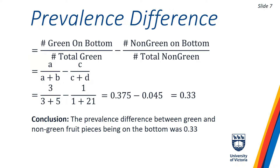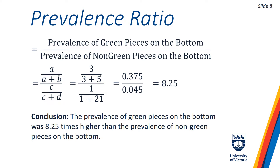On slide 7, we calculate the prevalence difference. This measure tells us the difference in the prevalence of factor 2 between each possible option in factor 1. In our fruit loaf example, about 37.5% of the green pieces were on the bottom and 4.5% of non-green pieces, resulting in a prevalence difference of about 0.33 — simply subtracting 4.5 from 37.5. You can try recalculating each measure by examining whether black pieces were more or less prevalent on the bottom and recreating that table.